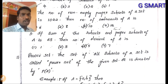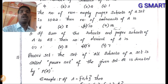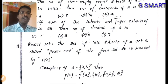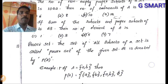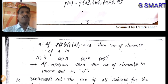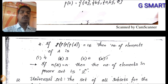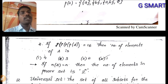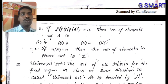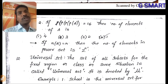Power set: the set of all subsets of a set is called the power set. For example, if A = {a, b}, then P(A) = {φ, {a}, {b}, {a, b}}. If n(A) = n, then the number of elements in the power set is 2^n. If P(P(P(A))) has 16 elements, we work back to find n = 1.